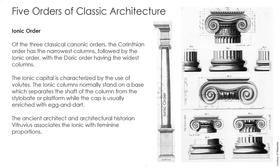The Ionic order, compared to the Corinthian and the Doric, is kind of in the middle. In the classic order you have the Corinthian — which has the slimmest column — then the Ionic, then the Doric. The Ionic capital is characterized by the use of volutes — these horn-like structures that sit on top of the capital. Ionic columns normally stand on a base which separates the shaft from the platform. The cap is usually enriched with egg-and-dart motif: there is a dart in between the eggs, and then an egg every so often.